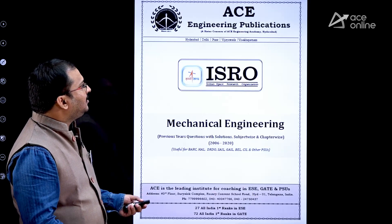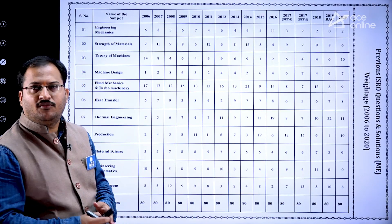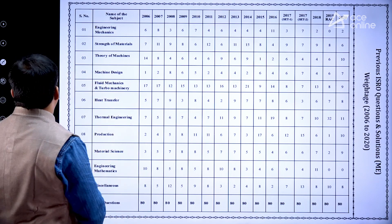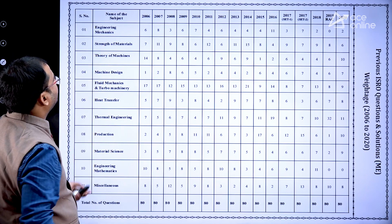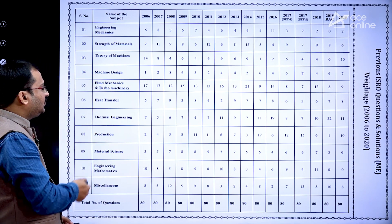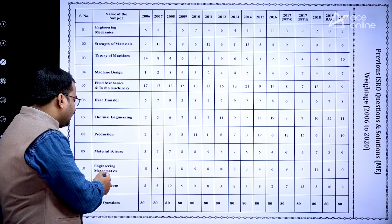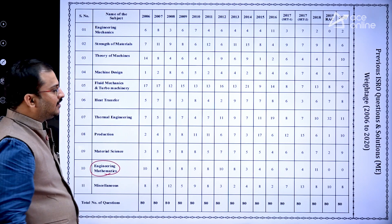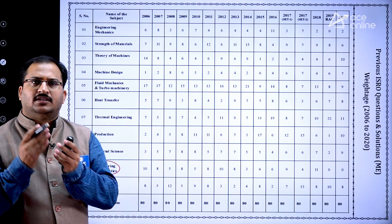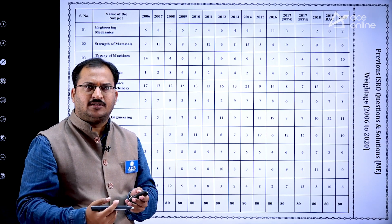This is the cover page of this particular book and the inner page looks like this. Now, coming to the previous year weightage of 2006 to 2020 questions, you can see the weightage of various subjects starting from Engineering Mechanics, Strength of Materials, Theory of Machines, Machine Design, Fluid Mechanics and Turbo Machinery, Heat Transfer, Thermal Engineering, Production or Manufacturing Engineering, Material Science, and Engineering Mathematics.